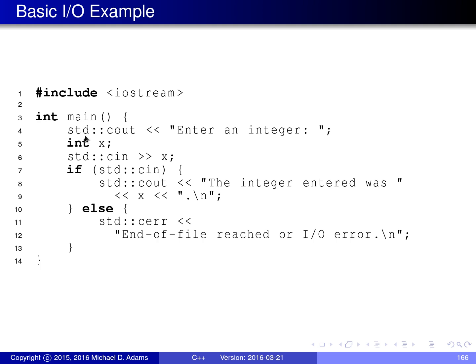Inside the main function, we use the output operator — the << operator, sometimes called a stream inserter because it inserts data into a stream — to write the message "enter an integer: " to the standard output stream cout. Then we declare a variable x of type int, and we use the >> operator, the stream extractor, to read an int value from standard input, the stream cin.